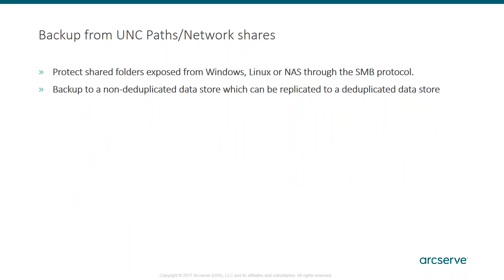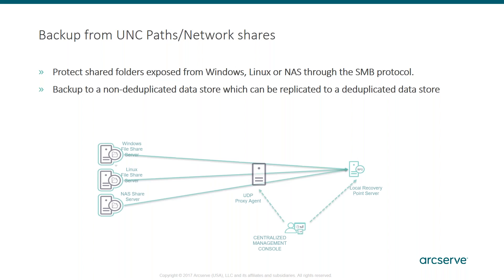Same for UNC paths — we don't need to back up to a non-deduplicated data store; we can back up directly to a deduplicated data store. We back up your shared folders through the SMB protocol. So if you just have data sitting on a NAS or similar that you need to back up and you're not worried about the systems themselves, we can do that as well.